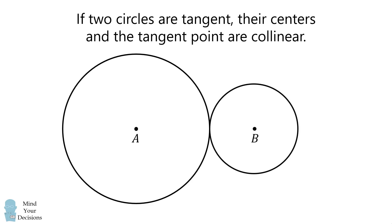First, recall that if two circles are tangent, their centers and the tangent point are collinear. This is because each circle's radius is perpendicular to the tangent line. Therefore, a, c, b will be a straight line segment. This is true for both externally and internally tangent circles.